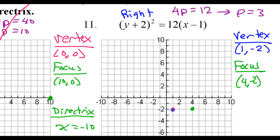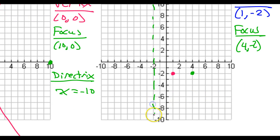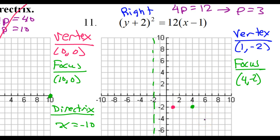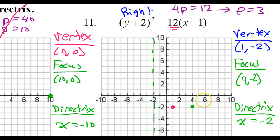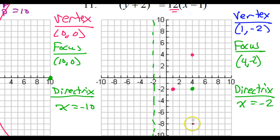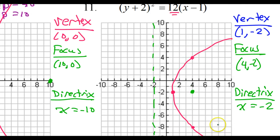The directrix should be 3 in the opposite direction. Vertical lines are always x equals, so x equals negative 2. The focal width will help me draw the parabola better — the focal width is 12, so that's going to be up 6 and down 6. That's it for number 11.